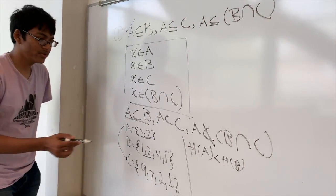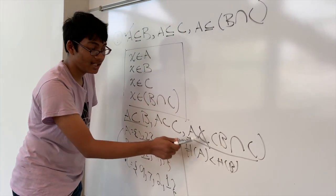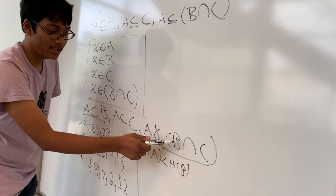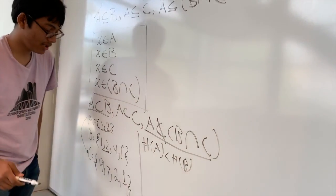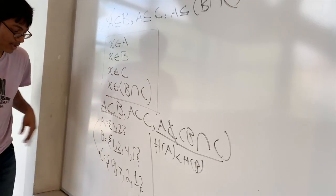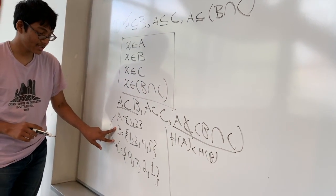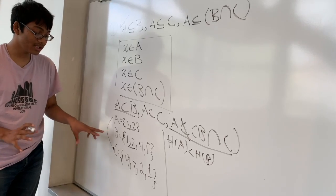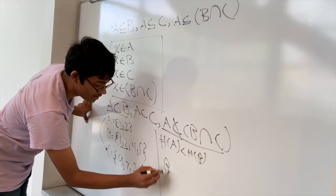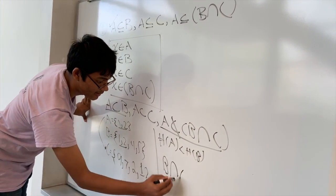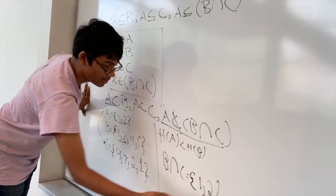And now we have to prove the last statement, that A is not necessarily a proper subset of the intersection of sets B and C. Well, the intersection of sets B and C is going to include all the common elements in both sets. So if you take the intersection, it's simply going to be {1, 2}.